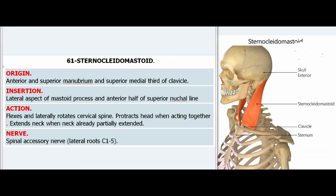61. Sternocleidomastoid. Origin: Anterior and superior manubrium and superior medial third of clavicle. Insertion: Lateral aspect of mastoid process and anterior half of superior nuchal line. Action: Flexes and laterally rotates cervical spine, protracts head when acting together, extends neck when neck already partially extended. Nerve: Spinal accessory nerve, lateral root C1–5.